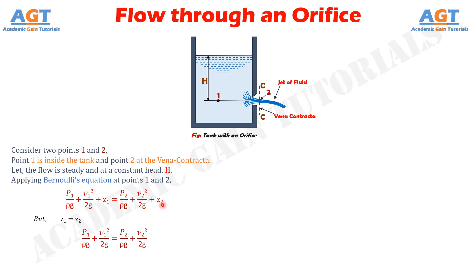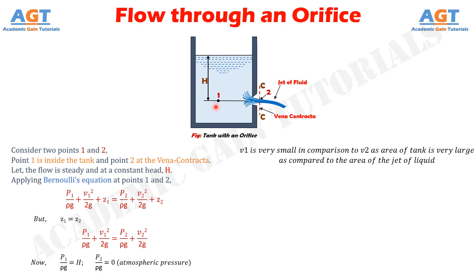Deducting z1 and z2 from both sides we have: p1 divided by ρg, plus v1 squared divided by 2g, equals p2 divided by ρg, plus v2 squared divided by 2g. Now, p1 divided by ρg will be equal to H, since it is inside the tank. And p2 divided by ρg will be equal to zero, since it is under atmospheric pressure. Again, v1 is very small or negligible in comparison to v2, as the area of the tank is very large compared to the area of the jet of liquid, so v1 can be considered as zero.